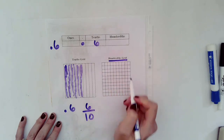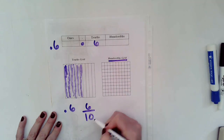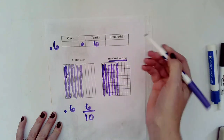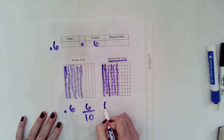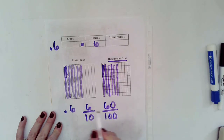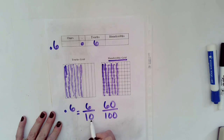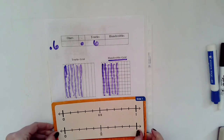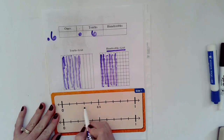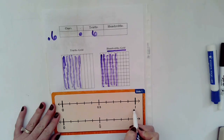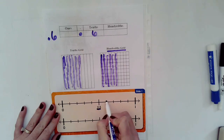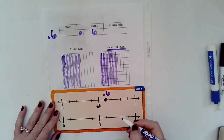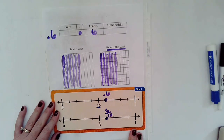We can do the same thing with a hundreds grid to see what six tenths looks like with a denominator of hundreds. I'll fill in six columns — if I counted all of those little blocks, I would have 60 hundredths. So six tenths in decimal form equals six tenths in fraction form, which also equals 60 hundredths. On a number line broken into ten parts, five tenths is in the middle, and one more gives us six tenths.